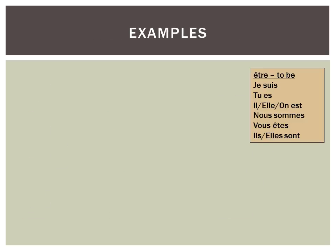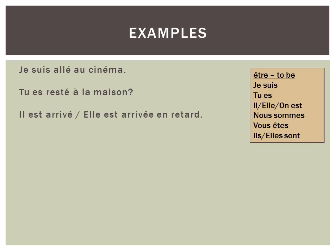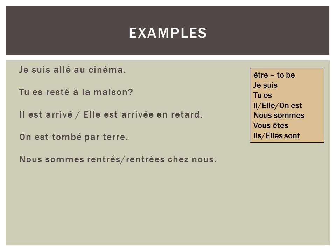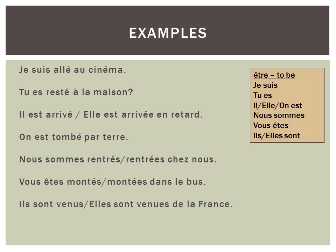Here are some examples, with the verb être shown as a reminder. Je suis allé au cinéma — I went to the cinema. Tu es resté à la maison — Did you stay at home? Il est arrivé, or elle est arrivée en retard — He or she arrived late. On est tombé par terre — We fell on the floor. Nous sommes rentrés chez nous — We went home. Vous êtes montés dans le bus — You got onto the bus. Ils sont venus, or elles sont venues, de la France — They came from France.